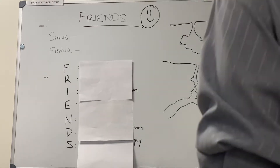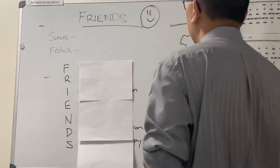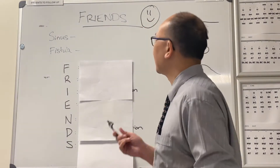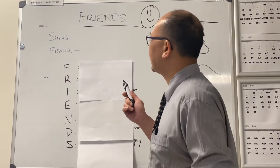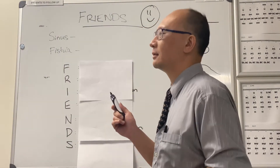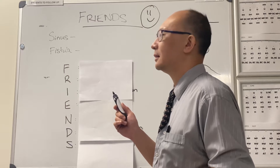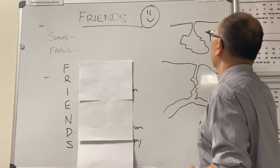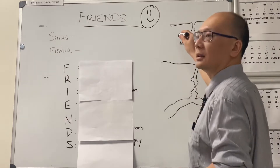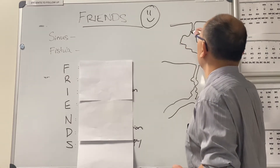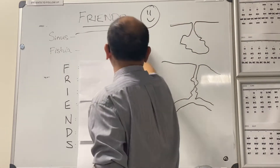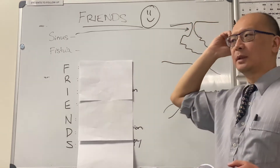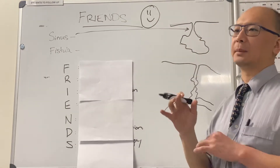We've got a patient with a fistula in the ward. What do friends have to do with fistulas? Firstly, some housekeeping. What's a sinus, Ramana? Is this a sinus or is that a sinus? The top one. That thing is a sinus, isn't it? So what's a sinus? The connection between a surface and a cavity below.